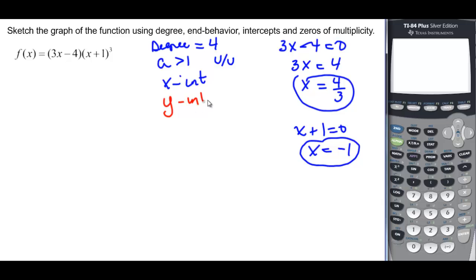And then the y-intercept, I'll do it in a different color. But remember, that's just going to be 3 times 0 minus 4 times 0 plus 1 quantity cubed. This is negative 4 times positive 1 cubed, which is just 1. So the y-intercept is going to be at 0, and then we've done the zeros and their multiplicities. We can do that when we're graphing. So I'm going to graph, here's my axes.